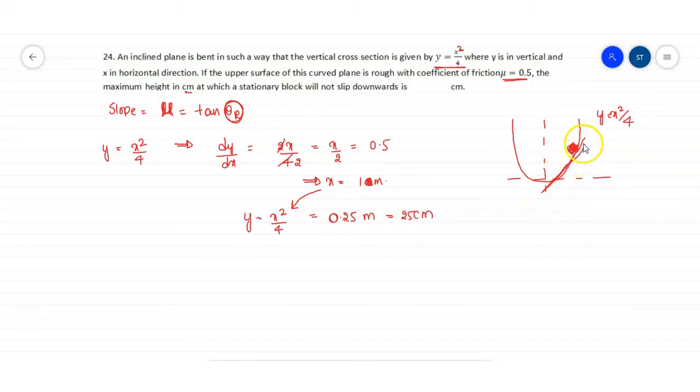Here when we draw a tangent to the graph, this theta will be equal to angle of repose theta r, or the slope will be equals to tan theta r, which is nothing but the coefficient of friction mu.